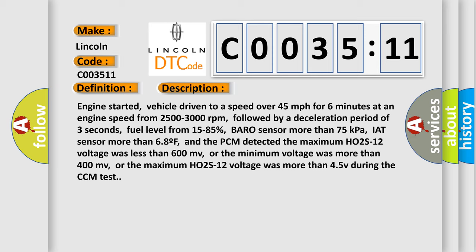IAT sensor more than 68°F, and the PCM detected the maximum HO2S12 voltage was less than 600 mV, or the minimum voltage was more than 400 mV, or the maximum HO2S12 voltage was more than 4.5V during the CCM test.